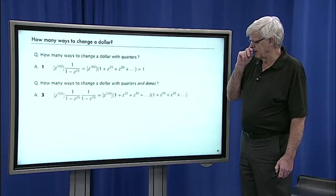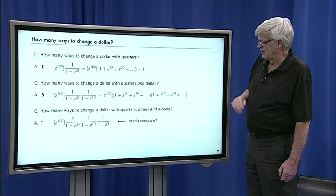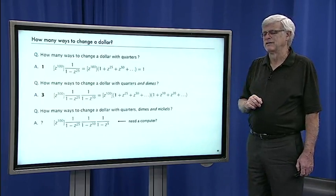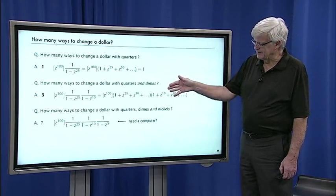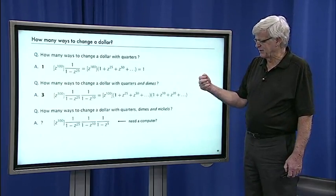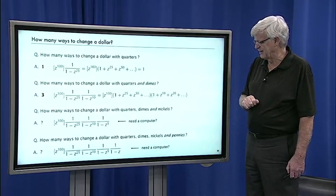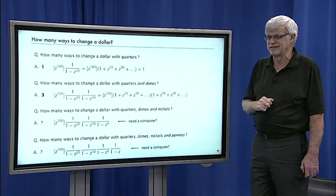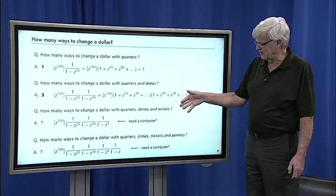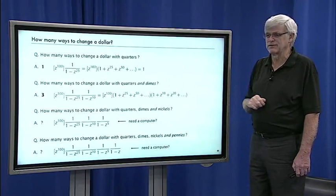So now what if we add quarters, quarters and dimes. What about if we add nickels? Well now if we add nickels you're going to say, well, I want a computer to do the symbolic analysis. Or what about pennies? So how many different ways are there to change a dollar with quarters, dimes, nickels and pennies.